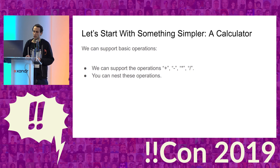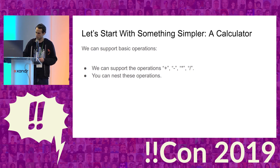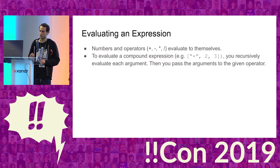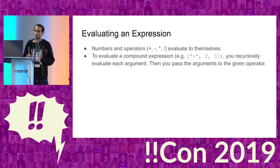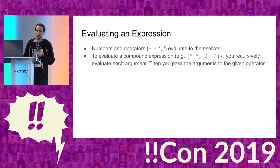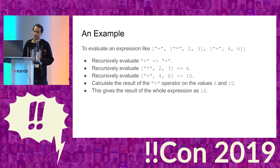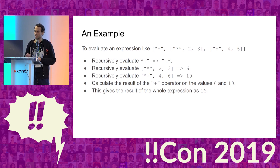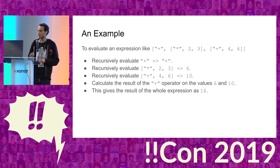We'll start with a basic calculator, supporting the basic arithmetic operations and the ability to nest these operations. To evaluate an expression, arithmetic operators and numbers will evaluate to themselves. To evaluate a compound expression, we will first recursively evaluate each argument and then apply the given operator to those arguments. For example, evaluating a complex expression gives us plus 6 and 10, and applying plus gives us 16.